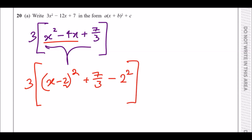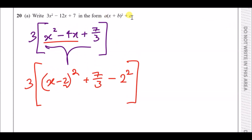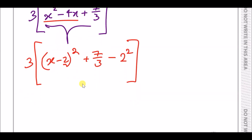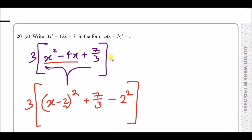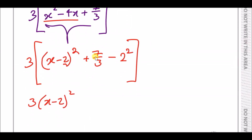Now we're done with the inside. To get into the correct form, it's three times the bracket. For the plus c term, there's no bracket around it, so it's three times those two values. In your calculator put seven over three minus two squared and multiply that by three. You get exactly minus five — you've completed the square.